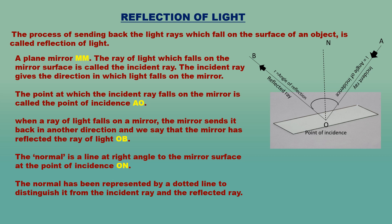The normal is a line at right angle to the mirror surface at the point of incidence. In other words, the normal is a line which is perpendicular to the mirror at the point of incidence. The normal has been represented by a dotted line to distinguish it from the incident ray and the reflected ray.